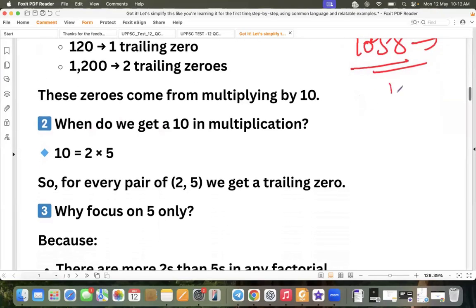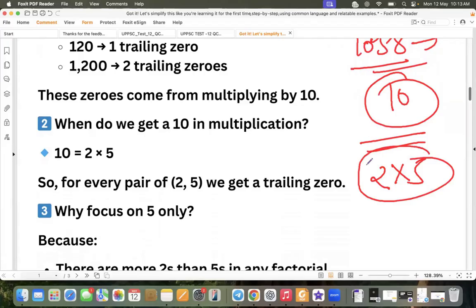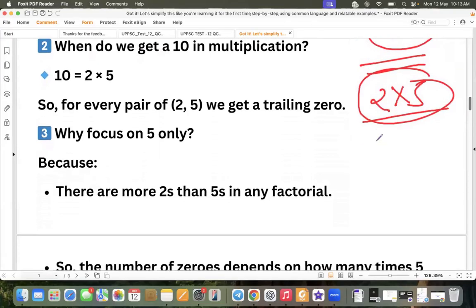And trailing 0 banta kaise hai? When 10 banega. When 10 will form, 10 will form by 2 into 5 ka factor. Jab tak there will not be 2, jab tak there will not be 5, 10 will not form. So we calculate either the number of 2s or number of 5s. But catch is there - that unless there is a 5, 10 cannot become.